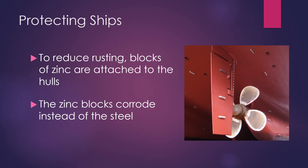The next example is protecting ships. Ships already use paint, but now an additional level of protection is added using zinc blocks. The zinc blocks are attached to the hull to corrode instead of the iron or steel, providing two levels of protection: paint and zinc blocks.